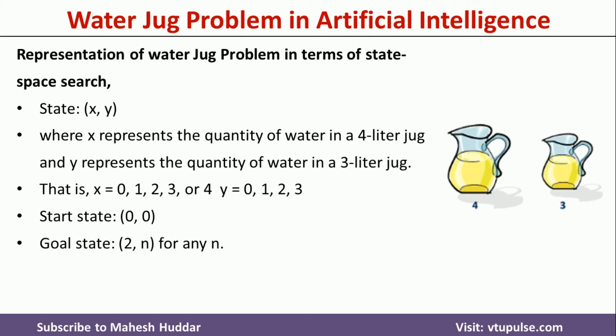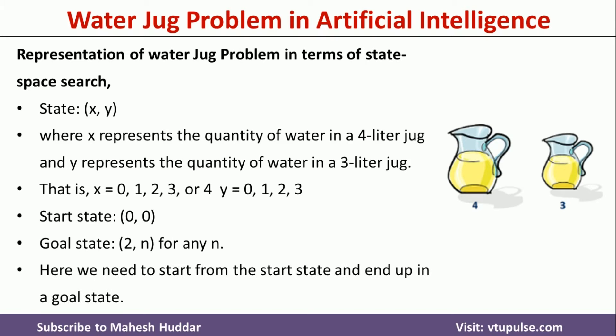The goal state is (2, n) for any n, because we are expecting 2 liters of water in the 4-liter jug. There is no specific value required for the 3-liter jug, so it can be any number — 0 or any other value. We need to start from the start state (0, 0) and reach the goal state (2, n). We have now represented our problem in the form of state space, and next we need to formulate all the production rules to go from start state to goal state.